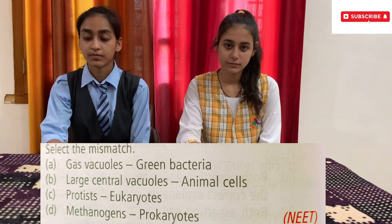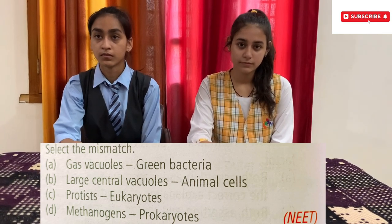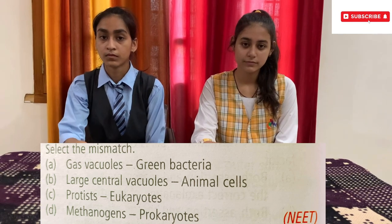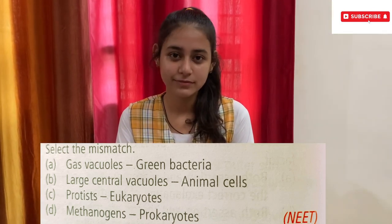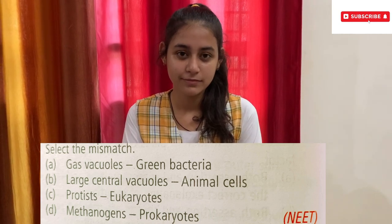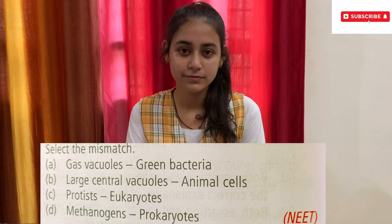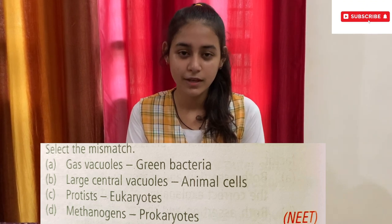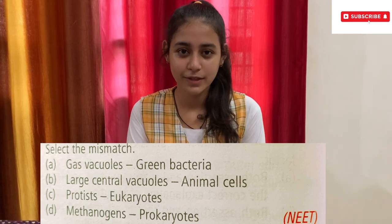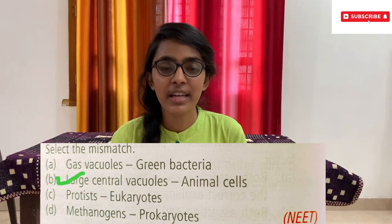The next question goes to both participants. Select the mismatch — options: A) Gas vacuoles – Green bacteria, B) Large central vacuoles – Animal cells, C) Protists – Eukaryotes, D) Methanogens – Prokaryotes. Simran taps first. Option B, Large central vacuoles – Animal cells. Are you sure? Yes ma'am. Option B is the correct answer. Give her a huge round of applause!